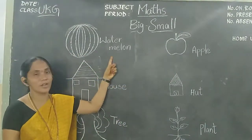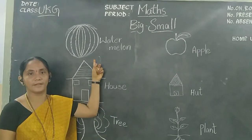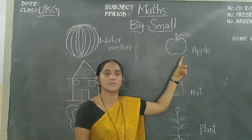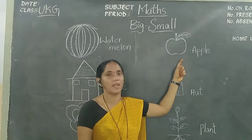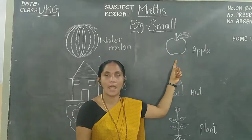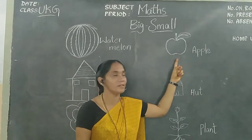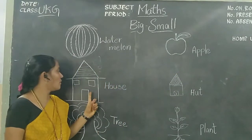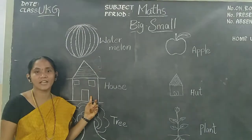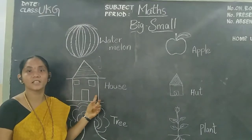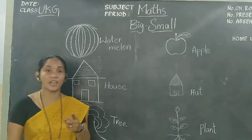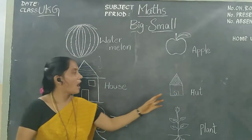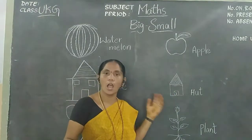What is this, children? This is a house. It looks very small. Apples — apples are small. One apple. What is this, children? This is a house. You stay here in the house. Small house and big house.